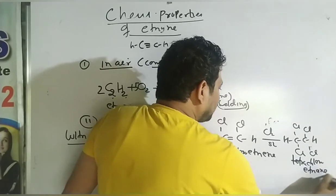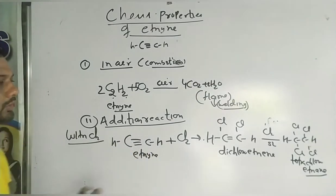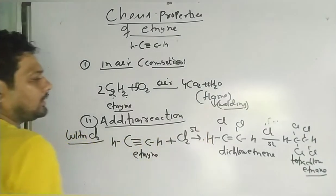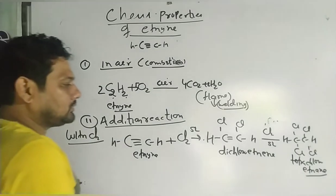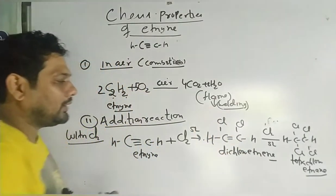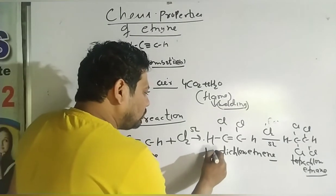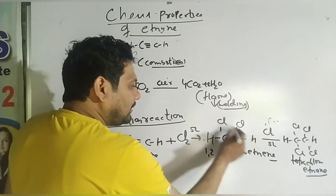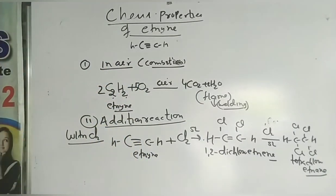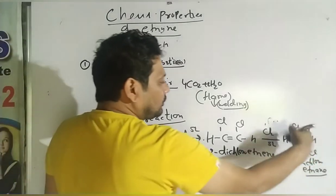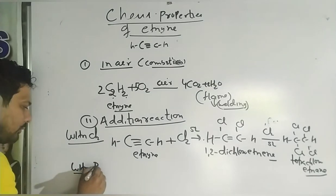So the name is ethyne. Ethyne undergoes addition reaction — chlorine in sunlight is added. Triple bond goes to double bond first, forming 1,2-dichloroethene. Adding more chlorine gives a single bond and the product is tetrachloroethane — four chlorines are added. With bromine, the same reaction occurs.